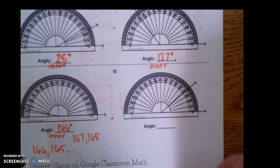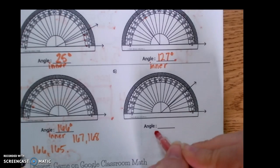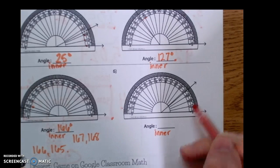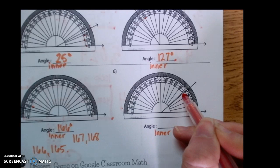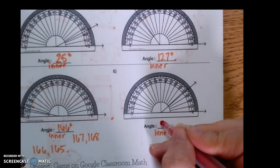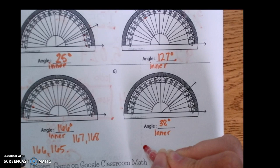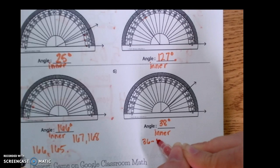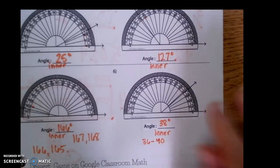Then on this one, we see that the bottom ray is pointed to the right. So we're going to use the inner numbers. We're counting up 10, 20, 30. It looks like 40, but it's two below 40. So it's going to be about 38. So again, you could do two lower than that, which would be 36 to 40. And if you did anywhere from 36 to 40, you got it right.